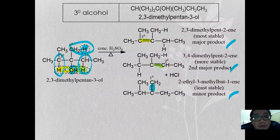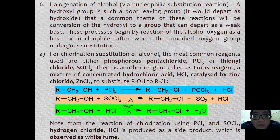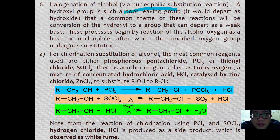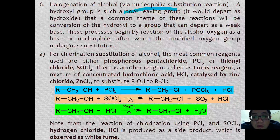That is all for the dehydration of alcohol. The last reaction we are going to look at is the halogenation of alcohol. A hydroxyl group is a poor leaving group, so a common theme of this reaction is to convert the hydroxyl group to a group that can depart as a weak base.